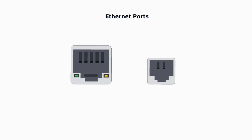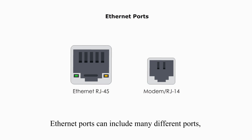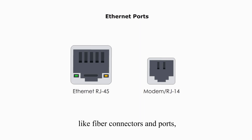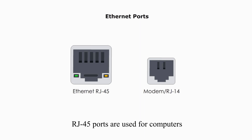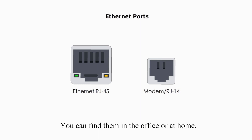First, Ethernet ports. Ethernet ports can include many different ports like fiber connectors and ports. But here I only list RG45 port and RG14 port as examples. RG45 ports are used for computers and RG14 ports are used for modems. You can find them in the office or at home.